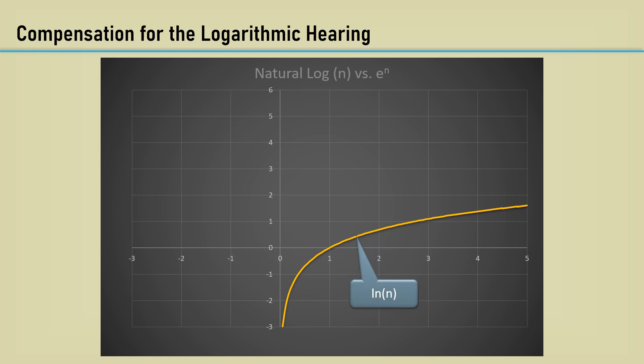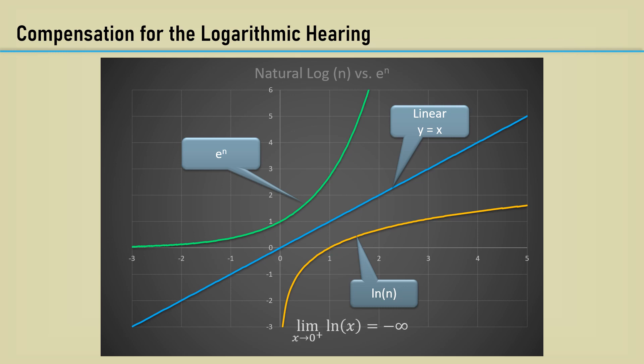Here's a plot of the natural log function. To compensate for our logarithmic hearing, the audio taper should be made to have the inverse log or exponential taper. You can see its inverse, e to the n, is mirrored across the linear line. The limit near 0 of the natural logarithm of x when x approaches 0 is minus infinity. And the limit near minus infinity of the e to the x function when x approaches minus infinity is 0. Let's move forward and look at some measured data on various audio taper pots.